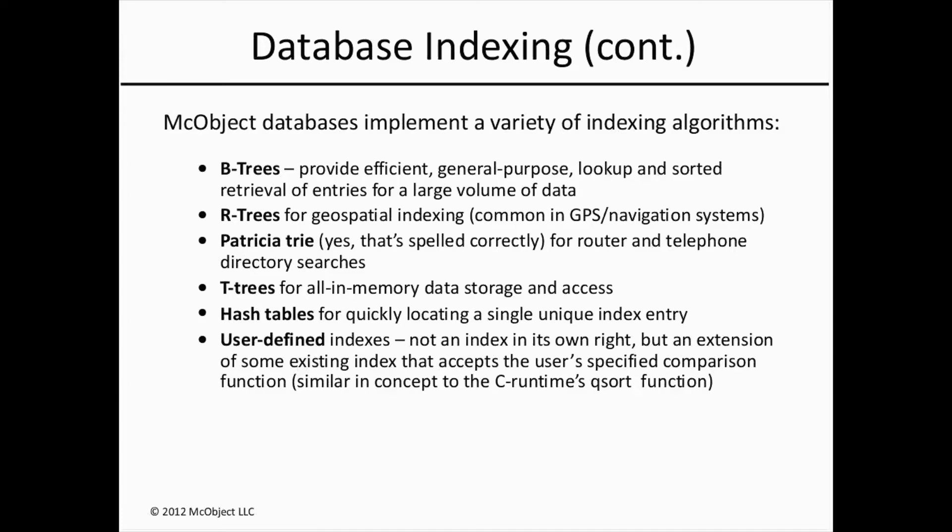Hash tables can quickly locate a single unique index entry. Hash indexes can be faster and use less memory than either of the types of tree indexes. And then custom indexes are B-trees that allow the application to define the collating sequence or the sort order of the entries, rather than defaulting to a simple lexicographical or numerical sorting. We'll look at a couple of examples of where being able to control that comparison function could be useful.